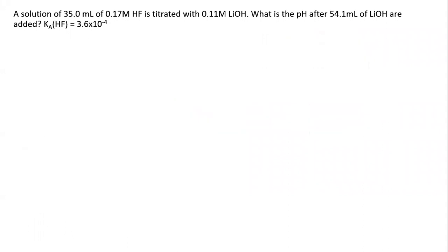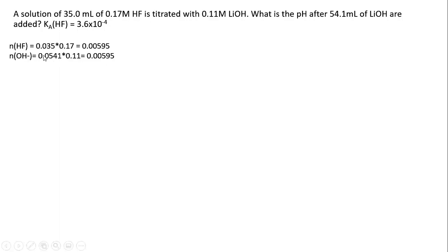The second problem uses the same weak acid solution — 35 milliliters of 0.17 molar hydrofluoric acid, again titrated with 0.11 molar lithium hydroxide. What's the pH after 54.1 milliliters of lithium hydroxide are added? Again, the first step is to determine the moles of weak acid and moles of strong base. Here we see that the moles of weak acid equal the moles of strong base, so we're at the equivalence point.